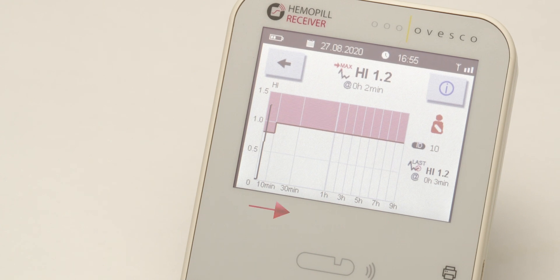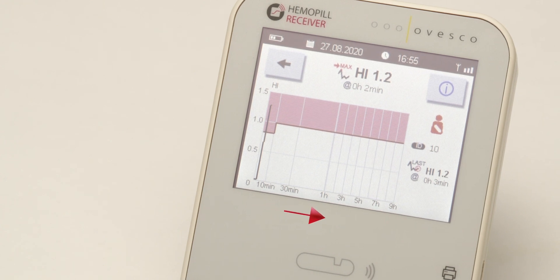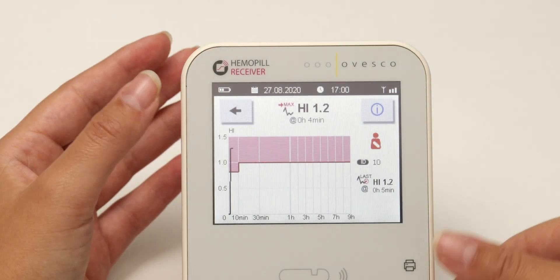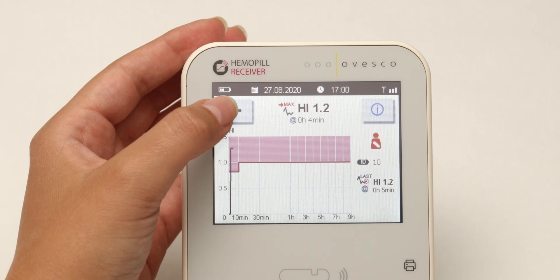The maximum measurement duration is 9 hours. Thus, the upper and middle digestive tract can be examined for blood. By clicking on the back button, the examination ends.